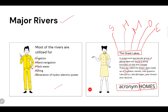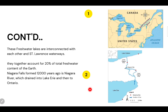HOMES: H stands for Huron, O for Ontario, M for Michigan, E for Erie, and S for Superior. These freshwater lakes are interconnected with each other and with the St. Lawrence waterway. Together, these five lakes account for 20 percent of the total freshwater contained on Earth.